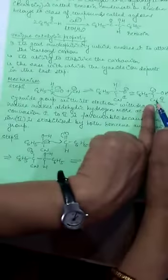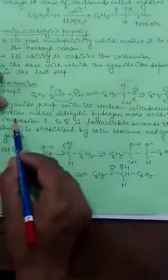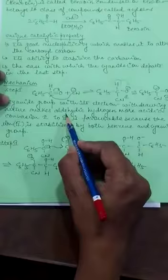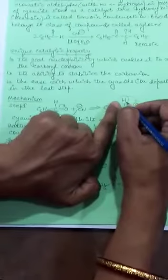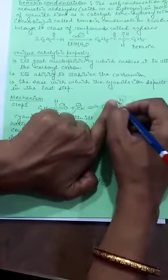The carbon has a negative charge, so this will be the carbon ion. The cyanide group with its electron withdrawing nature makes the aldehydic hydrogen more acidic. Because the cyanide ion pulls electrons towards itself, the hydrogen's acidity increases, meaning it can be easily removed.